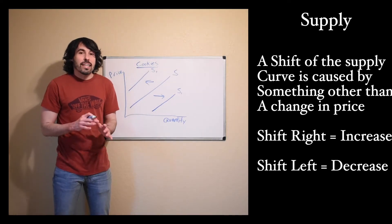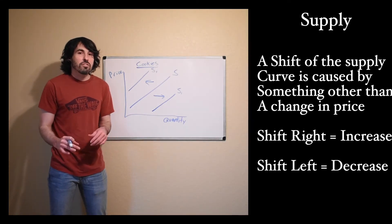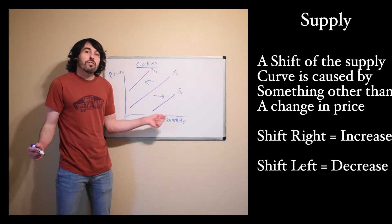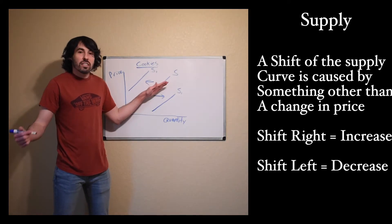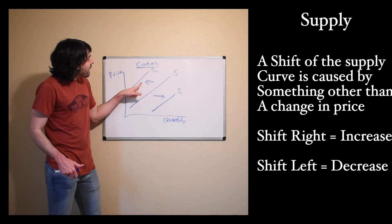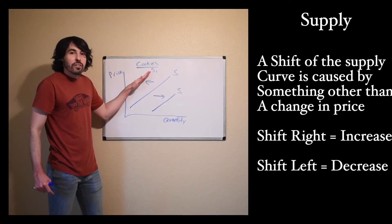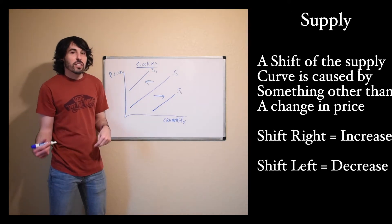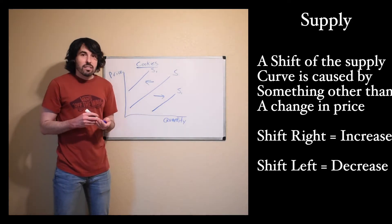Something you need to make sure you're not saying is supply going up or down. You should not say up or down because it's going to confuse you — you might end up shifting the curve in the wrong direction. Imagine if something caused the supply of cookies to increase and I said that the supply of cookies goes up. I might end up accidentally drawing my new supply curve to the left because that's literally up higher than the old supply curve. However, this would not be showing an increase in supply — it would be showing a decrease. So never say that it goes up or down.